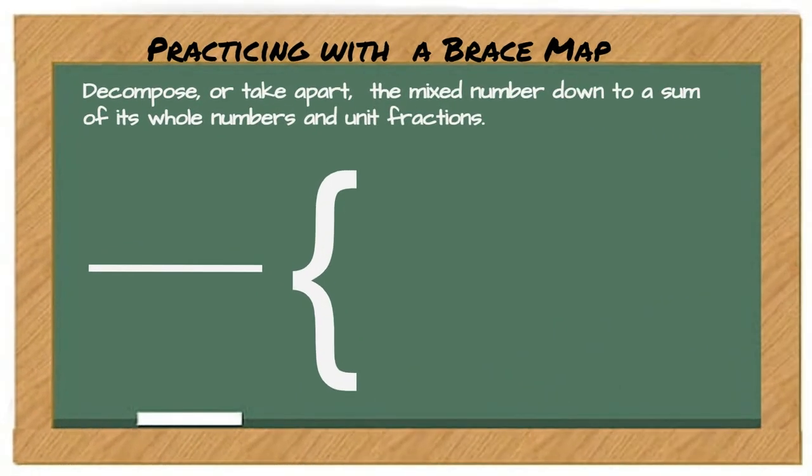Let's try one more fraction. Let's decompose or take apart the mixed number down to a sum of its whole numbers and unit fractions. We're taking it apart. We're breaking it down. We know that the number three can be broken down into a sum of its whole numbers and that's going to look like this. One plus one plus one.